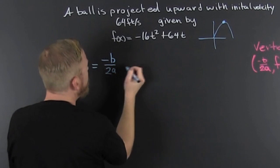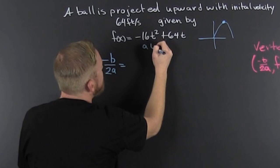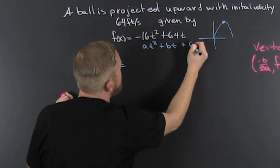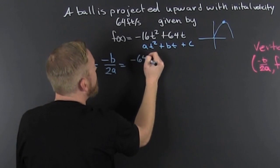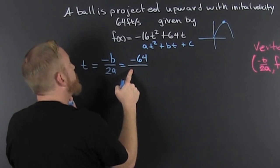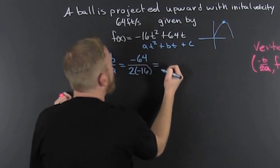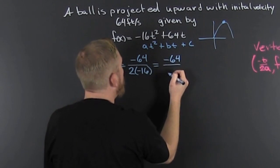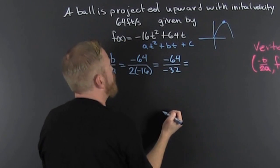This is t squared plus bt plus c. So it's minus b, or minus 64, divided by 2a - that's 2 times minus 16. We work it out: minus 64 over minus 32. Look at the nice numbered world you live in - our t is 2.